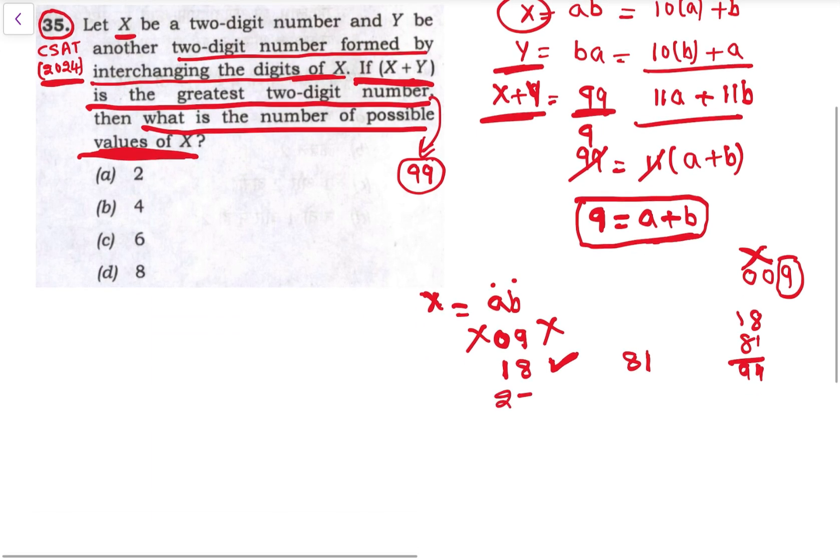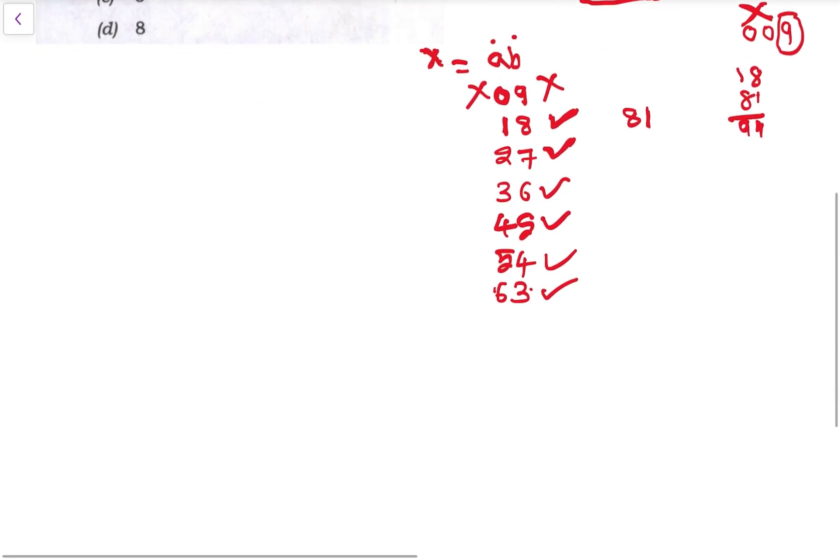Then a is 2 and b is 7, so 27 is one other possibility. Then 36 is a number, then 45 is another number, then 54.